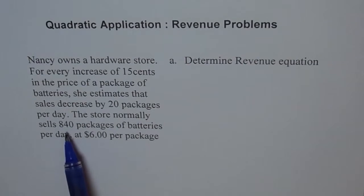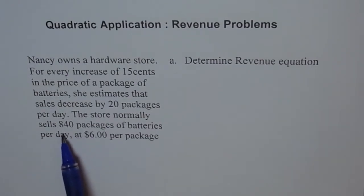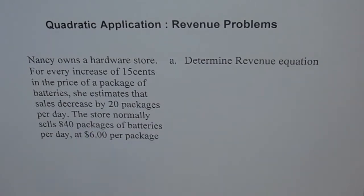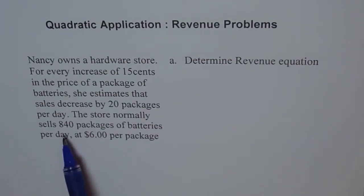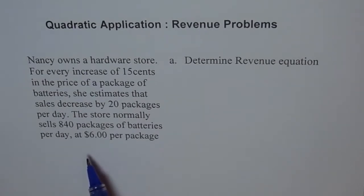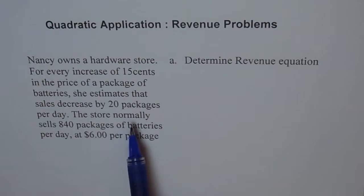If the cost is $6 per package, then the sales are 840 packages and the revenue is 840 times $6. Now, if you increase the cost from $6 to $6.15, then instead of selling 840 packages, you can only sell 820 — 20 less packages. If you increase by another 15 cents to $6.30, the price is now 2 times 15 = 30 cents more, so sales drop by 40, giving 800 packages sold.